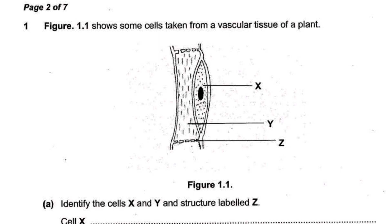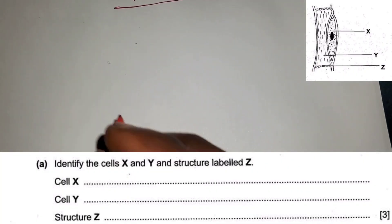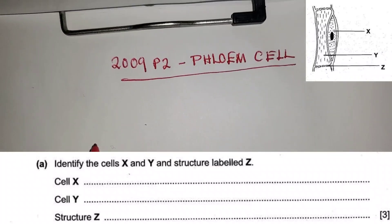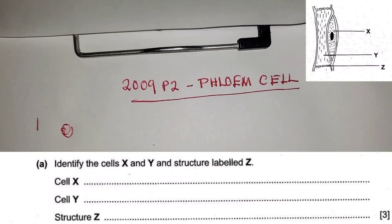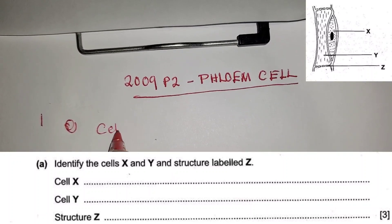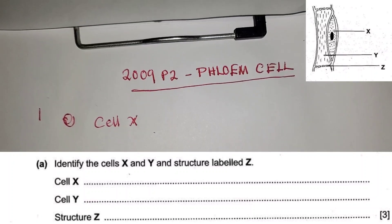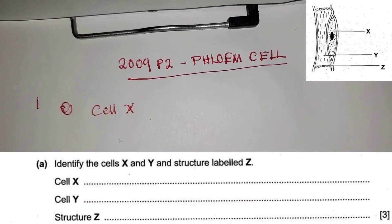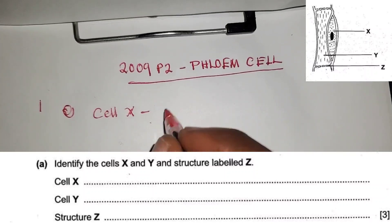The question reads: figure 1.1 shows some cells taken from a vascular tissue of a plant. Question A, we are asked to name cells X and Y and the structure labeled Z. The answers - this is question 1A. Cell X, remember there's a thing, cell, not the part. So cell X is companion cell.